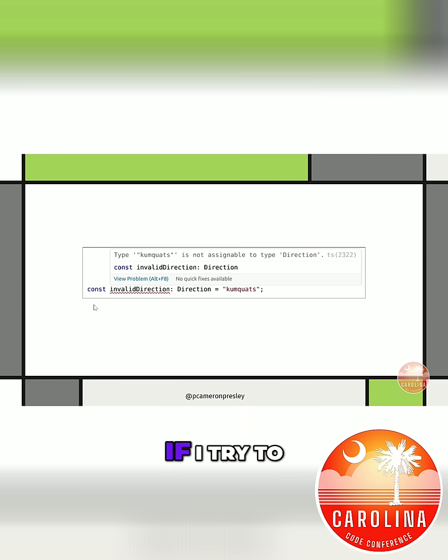Don't believe me? If I try to create a value of direction with the type of direction and assign it the string 'kumquats', it won't compile. TypeScript is telling me, 'Hey, I can't do that, that string's not a valid option for this type.' Sweet.